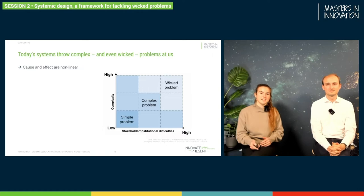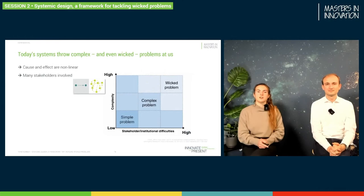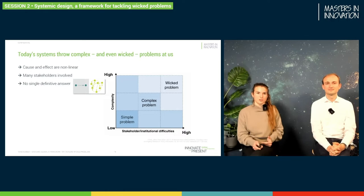We call these issues wicked problems — problems that may be created in complex systems because the causes and effects are non-linear. That means they are interconnected not in a straightforward way, but in circular ways. For example, in the electricity power grid network, the connection between a producer and a consumer could be the same — one could be the other. The effect of a cause could be related back to each other. And we already noted there could be so many stakeholders. One wicked problem does not have one definite answer — there are many solutions.